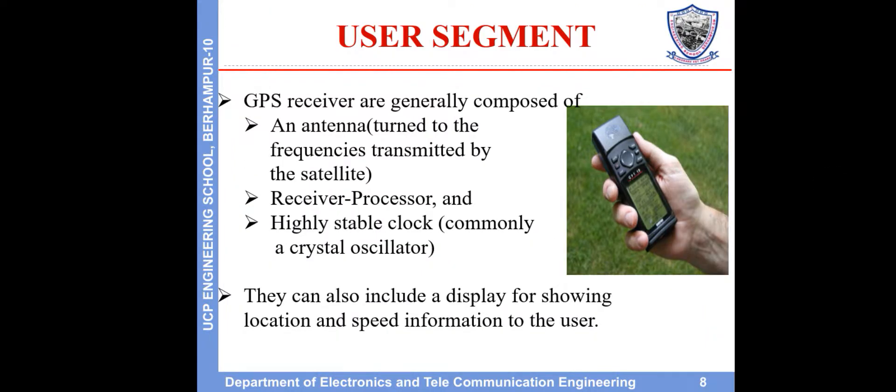User segment. GPS receivers are generally composed of an antenna tuned to the frequencies transmitted by the satellite, a receiver processor, and a highly stable clock, commonly a crystal oscillator. They can also include a display for showing location and speed information to the user.